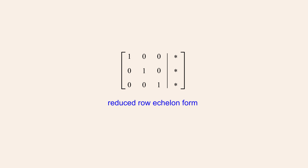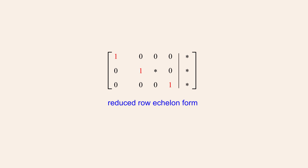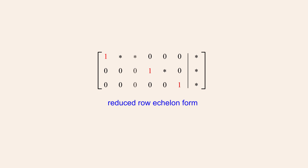However, some augmented matrices in reduced row echelon form may have columns to the left of the vertical line which do not include leading entries. A matrix like this is still in reduced row echelon form since all the leading entries are ones, each leading entry lies to the right of the leading entry above it, and each leading entry is the only non-zero entry in its column. In this case, some rows will have more than one non-zero coefficient entry and these non-zero entries may have values other than one.